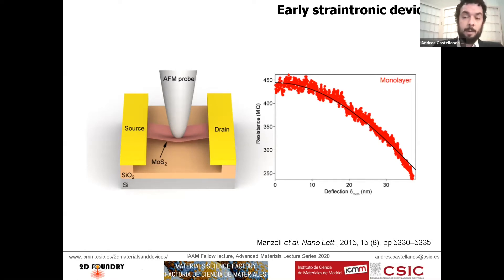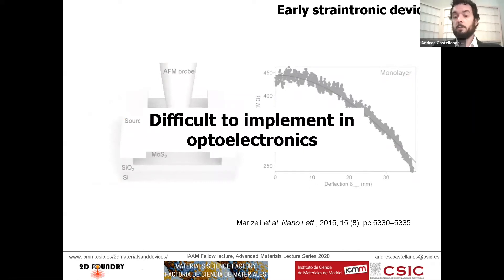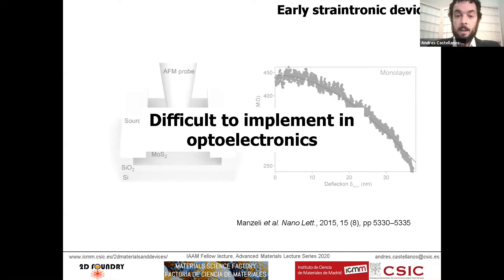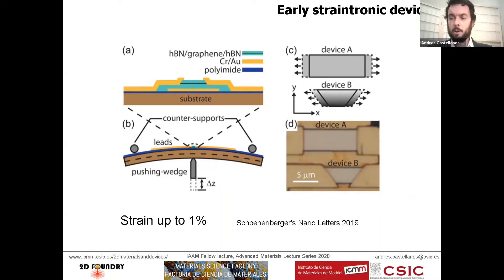The problem with this geometry is that you need an AFM tip on top of the suspended beam at all times, which makes the setup cumbersome, especially for optoelectronics — the AFM tip blocks illumination of the device. Other approaches have been reported, such as Sonnenberger's group using a mechanically controllable break-junction in a fully encapsulated graphene device to measure electric field characteristics of graphene upon strain, though not interacting with light.